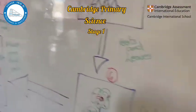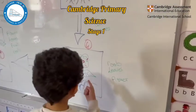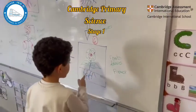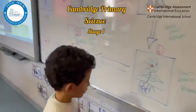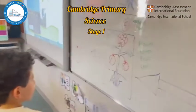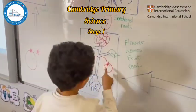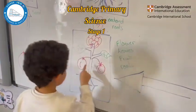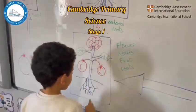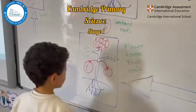And here, number four? Flower, leaves, roots. And the final stage is? Flower, leaves, roots.